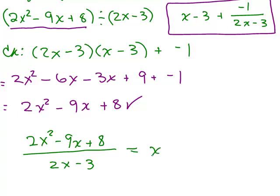The answer is still x minus 3 and you could write plus negative 1 or just put the minus sign in front of the fraction bar, 2x minus 3. You want to get used to seeing the answer written different ways, the original problem written different ways. They all really mean the same thing.